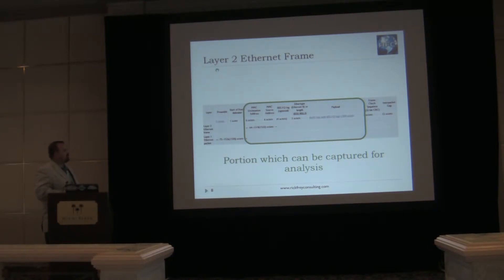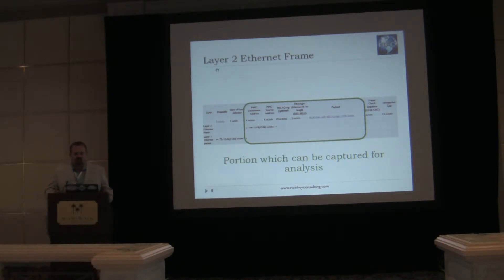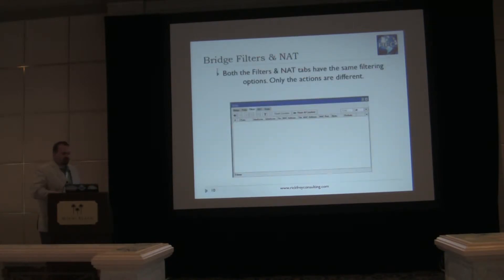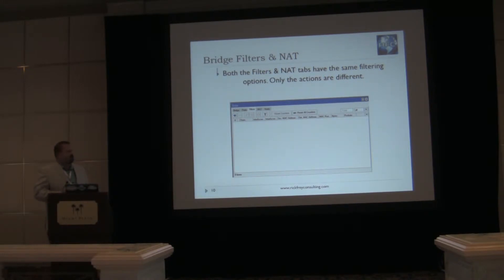The only thing that we can do a packet capture on is those visible fields — and conversely, that's also the only amount of information we can filter against in our firewall. For Layer 2 packets, we'll want to filter against them using the bridge firewall. The filters are identical for both the filters tab and the NAT tab, so we'll only talk about the filters once because the only difference would be the actions.